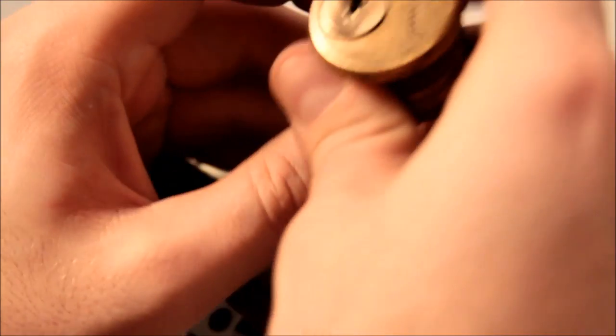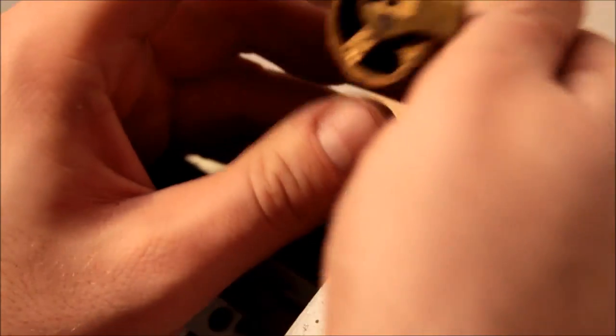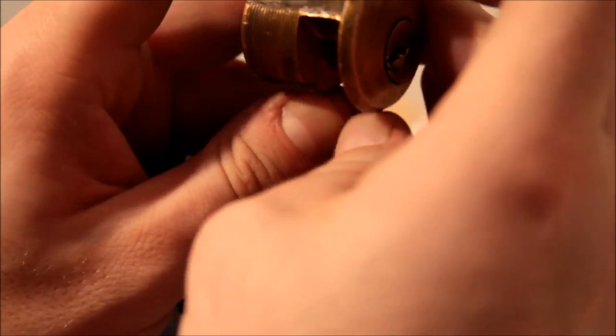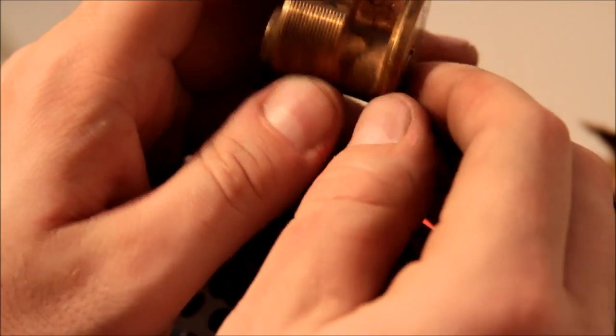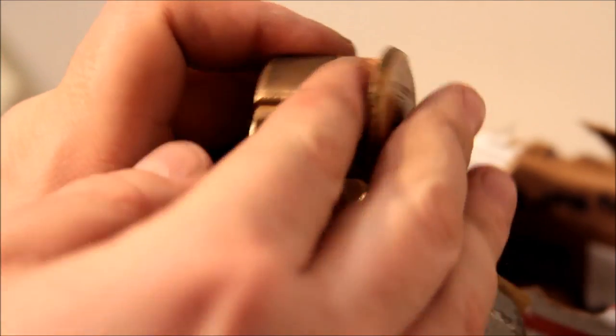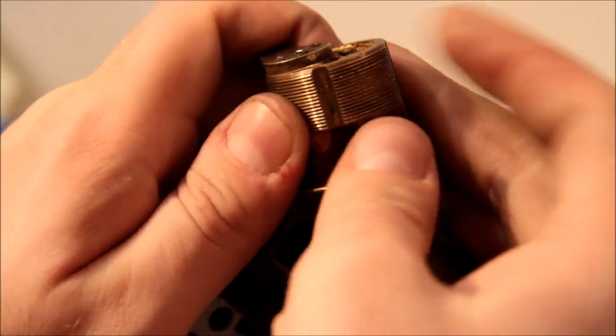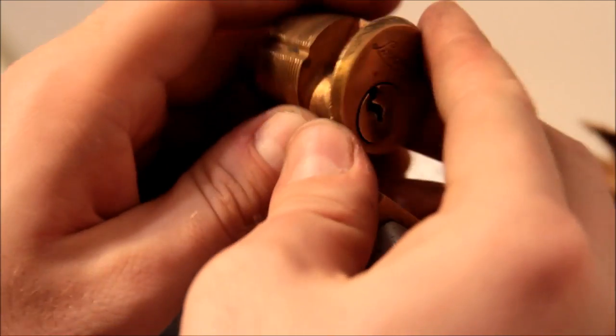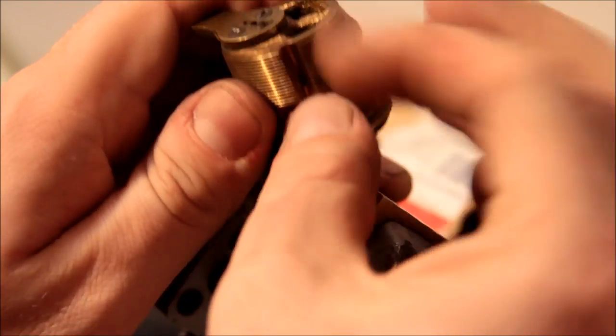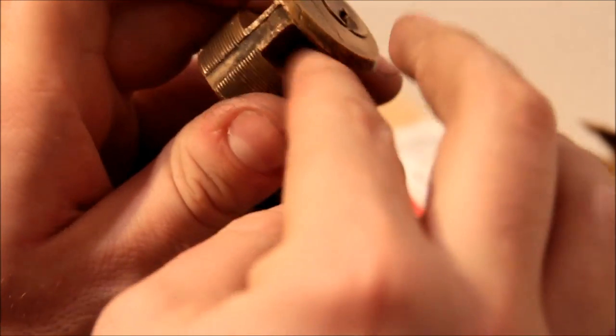And it looks like I hit a different shear line than the key. It's not surprising because we do believe that it's a master pin. These are kind of interesting little mortise locks. They've got this relief here. It's almost like they started making a rim mortise cylinder and they're like, no, no, no, we need a mortise cylinder. So they threaded the rest of it. It's probably to save metal.